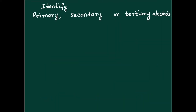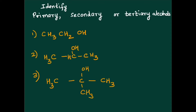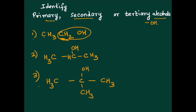Let's test you now. The question for you is to identify the primary, secondary or tertiary alcohol out of these. You know that alcohol is the compound wherein the functional group is OH. Have a look at the carbon to which OH is attached — concentrate on that carbon. That particular carbon is attached to how many other carbon atoms will give you an idea whether it is primary, secondary or tertiary. Attempt this question.